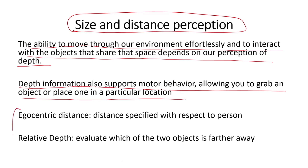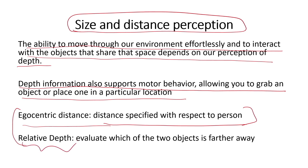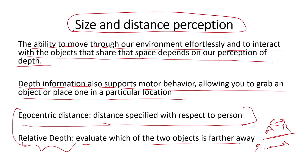There are two types of distance measurements. One is egocentric distance — how far something is from oneself. The other is relative depth — how far object A is from object B. Both types of information are used by people for measuring depth.